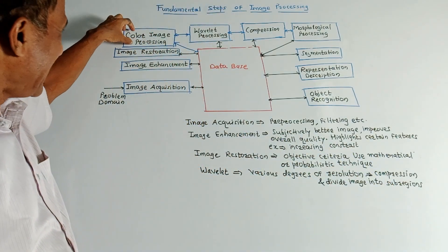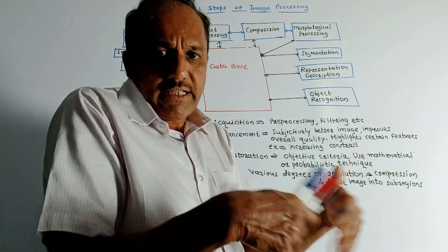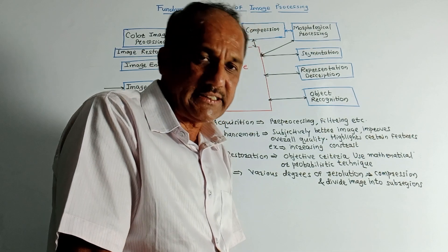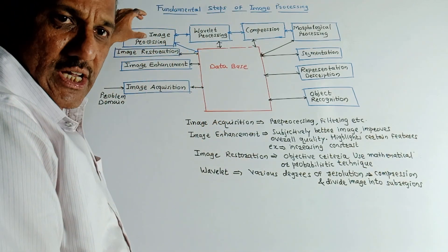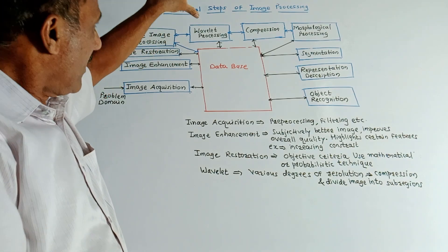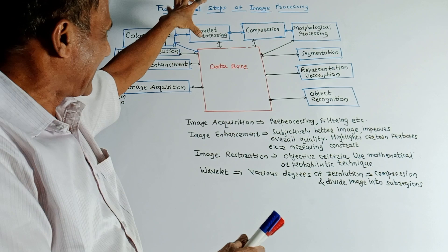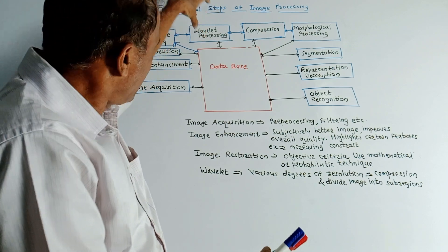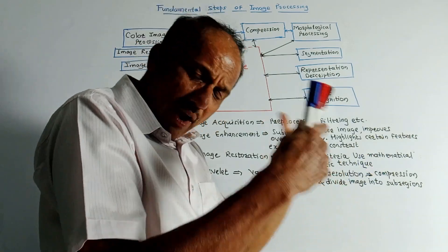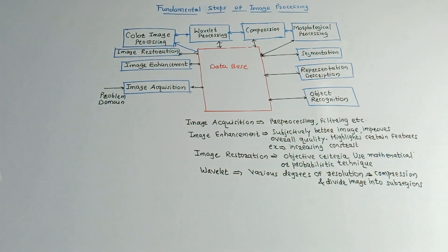The next block is color image processing. Due to the increase in the use of internet and color images, we can process images in color formats, which we will study in detail. Next is wavelet processing. To obtain various degrees of resolution, wavelet processing is used. By making use of wavelet processing methods, we can divide an image into various subsections, which is required for compression of an image.